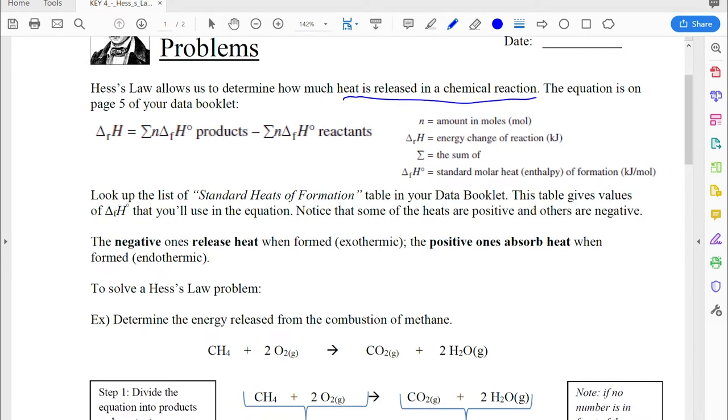Now when you look at that table, you'll notice that some of the values are positive and some of them are negative. So if it's a negative value, what that's going to mean is that energy is going to be released when that compound is formed. And if it's a positive, it means energy is absorbed. We call reactions where energy is released exothermic, and we call reactions where energy is absorbed endothermic.